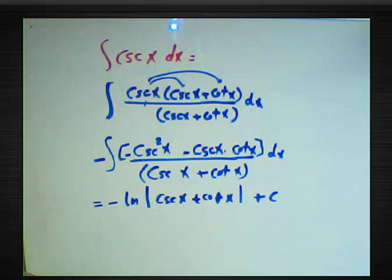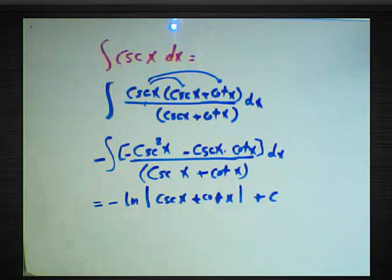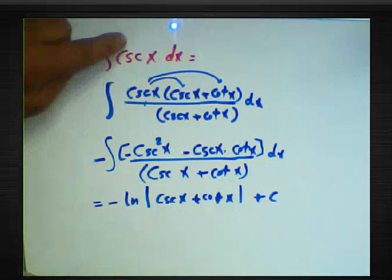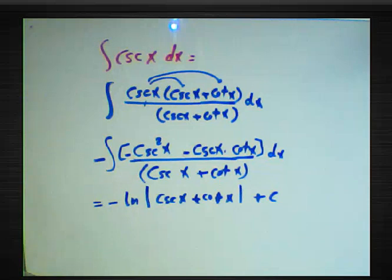This is very important: if you change csc x to sec x in the same example, you must multiply by the expression (sec x + tan x) instead.